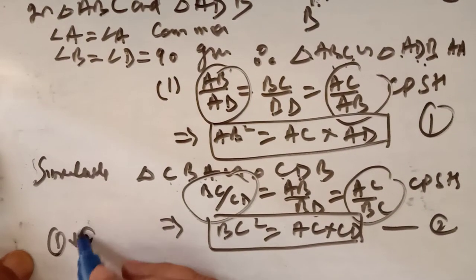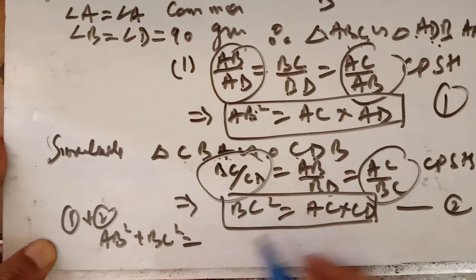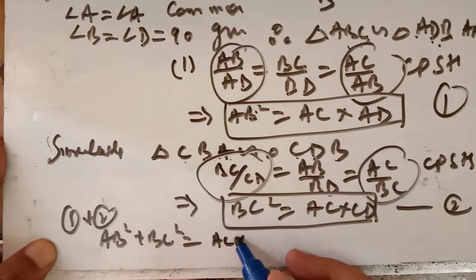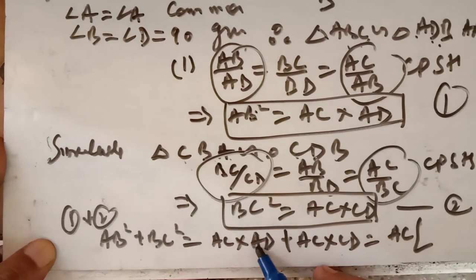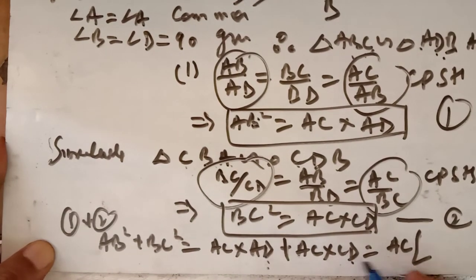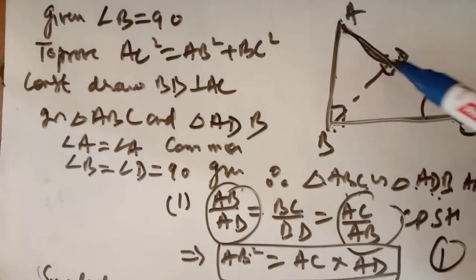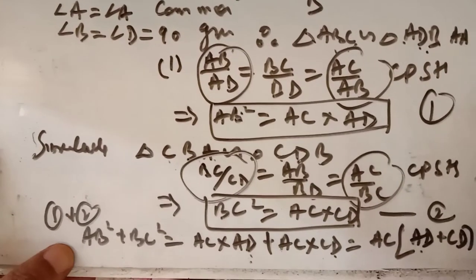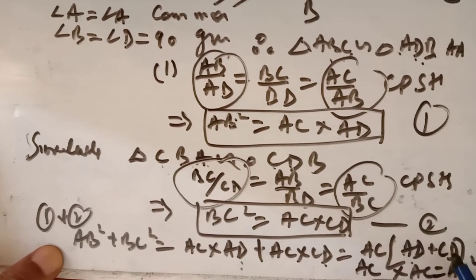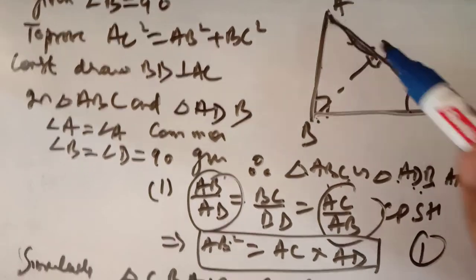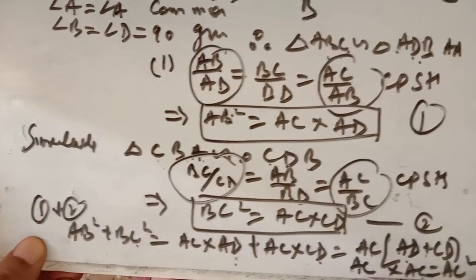Now add step 1 and step 2: AB² + BC² = AC · AD + AC · CD. AC is common, so AB² + BC² = AC(AD + CD). And AD + CD = AC, so AB² + BC² = AC · AC = AC². Therefore AB² + BC² = AC². We proved this by first making triangle ABC similar to ADB, then CBA similar to CDB. Step 1 gave AB² = AC · AD; Step 2 gave BC² = CD · AC; adding both steps completes the Pythagoras theorem.